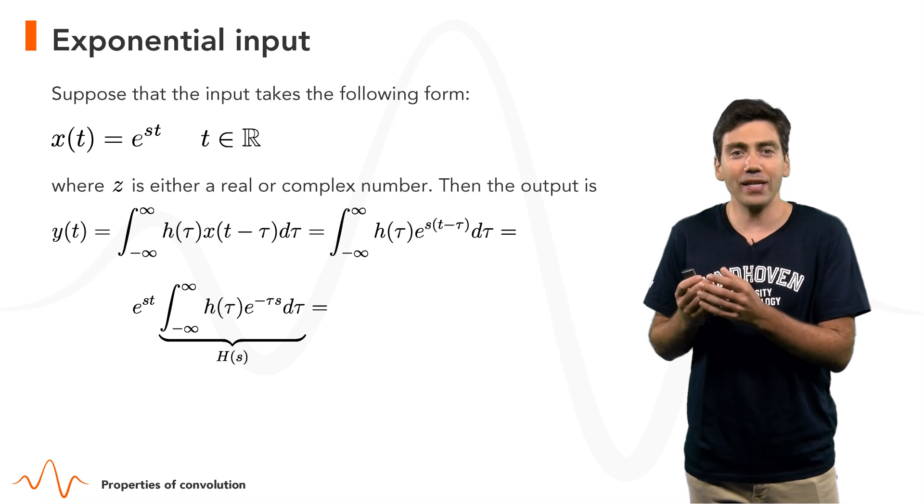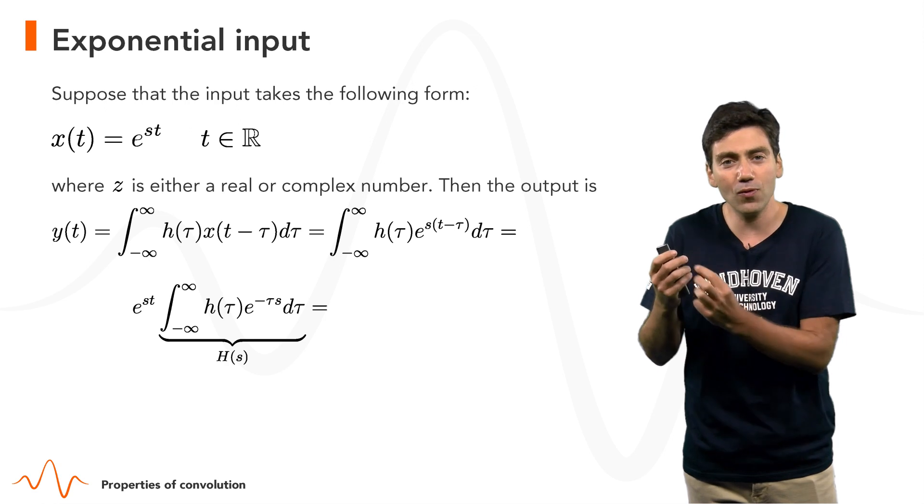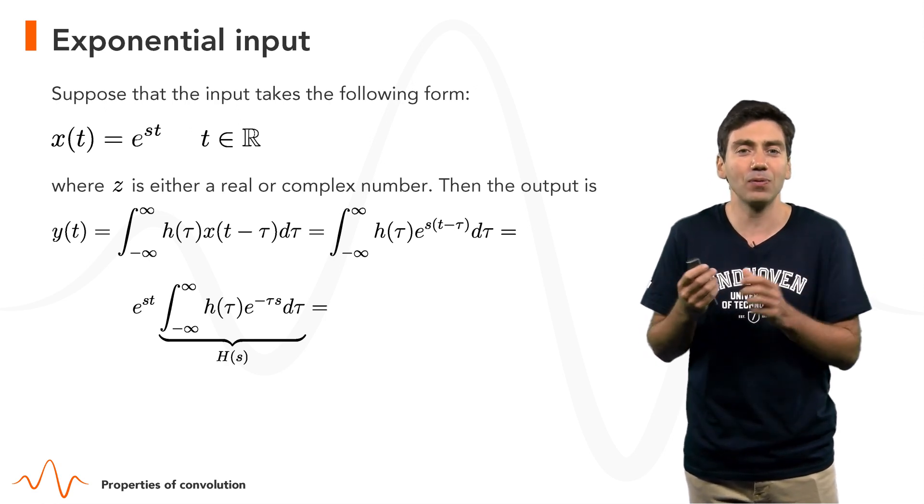And then the crucial thing is that, since e^(st) does not depend on τ, we can move it out of the integral. And we get already the exponential that we're looking for.